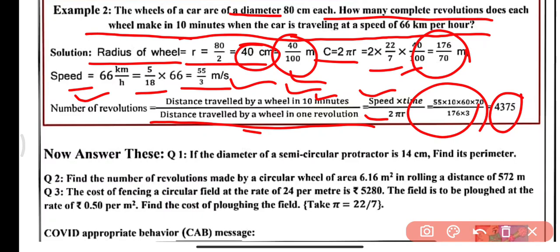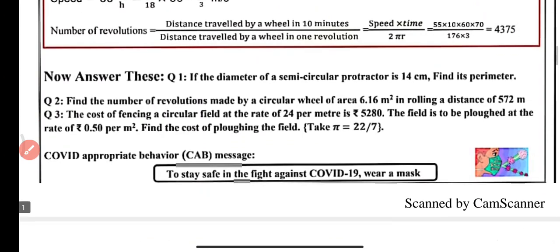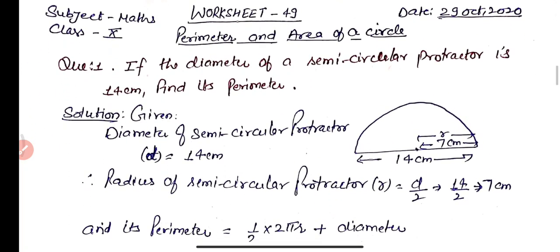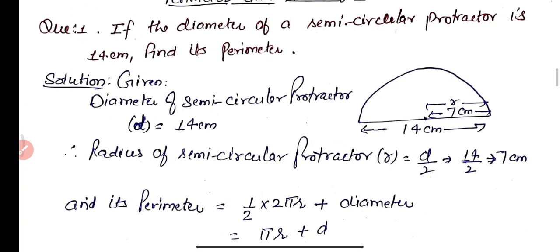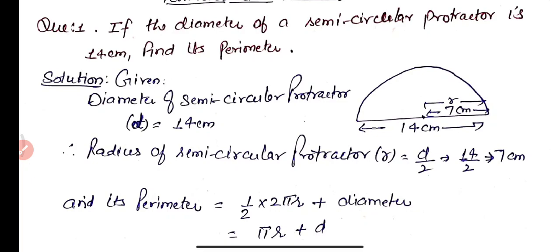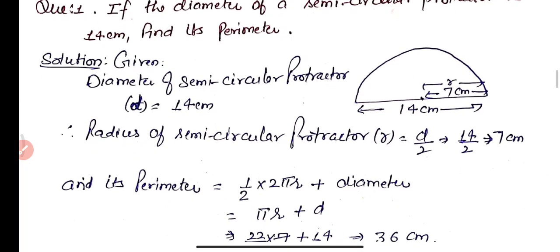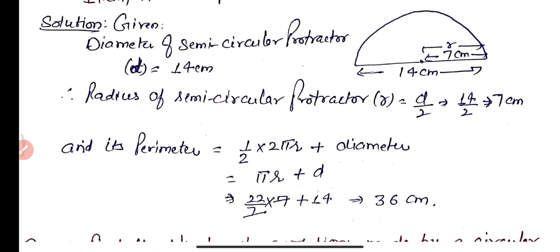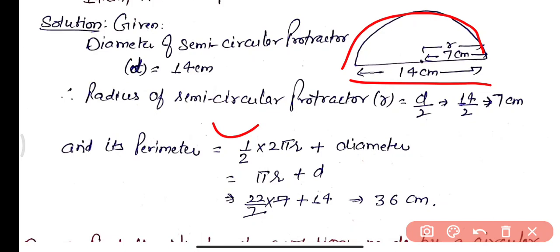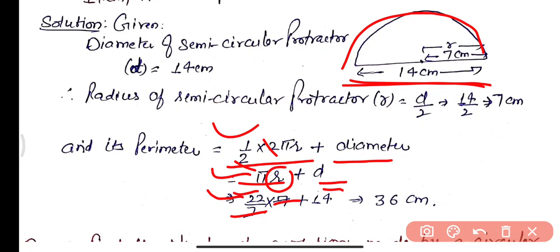Practice question 1: If the diameter of a semicircular protractor is 14 centimeters, find its perimeter. Radius = 14/2 = 7 cm. Perimeter of protractor = half the circumference of circle plus diameter = (1/2) × 2πr + 14 = πr + 14. Substituting π = 22/7 and r = 7: 7 and 7 cancel, giving 22 + 14 = 36 centimeters.